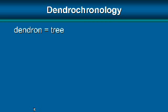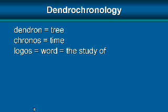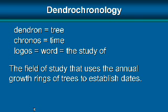Dendrochronology comes from the term dendron, which means tree; chronos, which means time; and logos, which means the word or study of. So the definition of dendrochronology is the field of study that uses the annual growth rings of trees to establish dates.